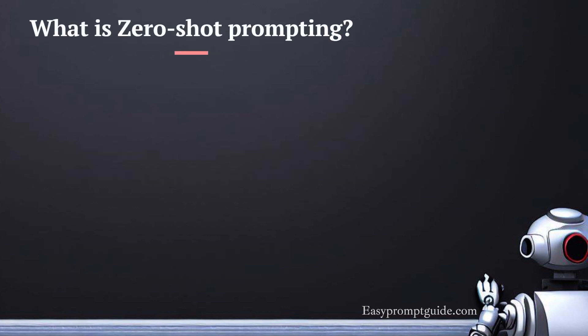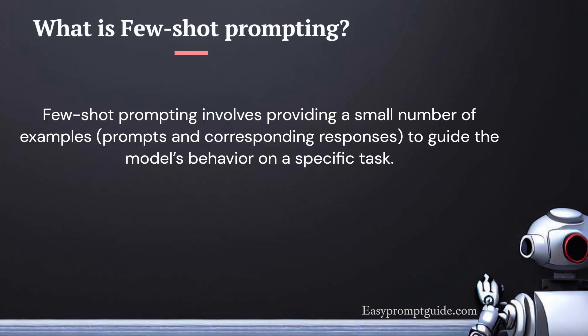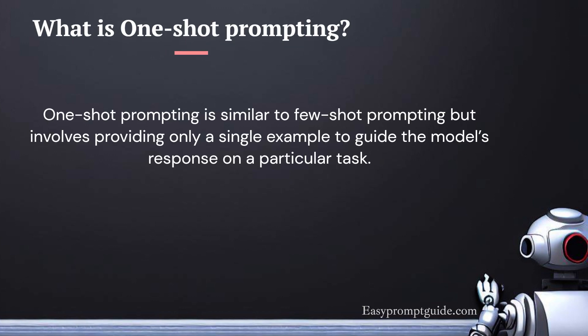What is zero-shot prompting? Zero-shot prompting is when the model generates a response for a task without any specific examples provided, relying on its pre-trained knowledge. What is few-shot prompting? Few-shot prompting involves providing a small number of examples — prompts and corresponding responses — to guide the model's behavior on a specific task. What is one-shot prompting? One-shot prompting is similar to few-shot prompting but involves providing only a single example to guide the model's response on a particular task.